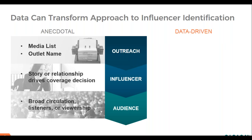With regards to the audience, the people reached are largely unknown. All the communicator has to go on is vague circulation, listener, or viewership data the media outlet publishes. Once they've gone through these steps hoping for coverage, they then either abandon that influencer outreach or try again.